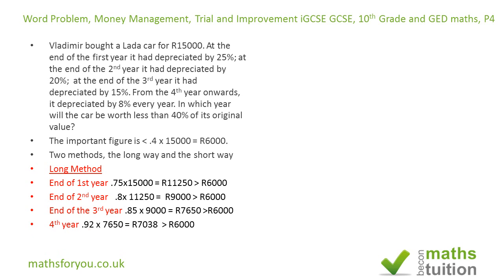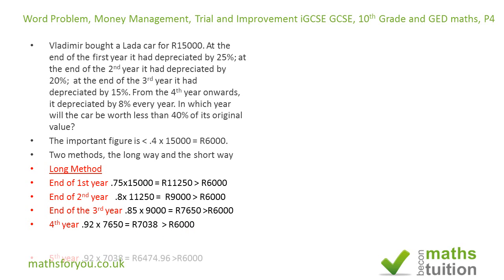At the end of the fourth year, the car has gone down by 8%, so it's now worth 0.92 of what it was worth at the end of the third year. So 0.92 times 7,650 rubles gives us 7,038 rubles — again more than 6,000, so we move on to the fifth year.